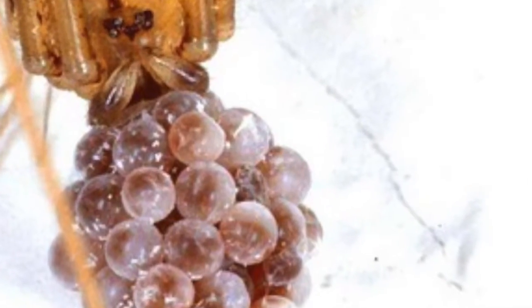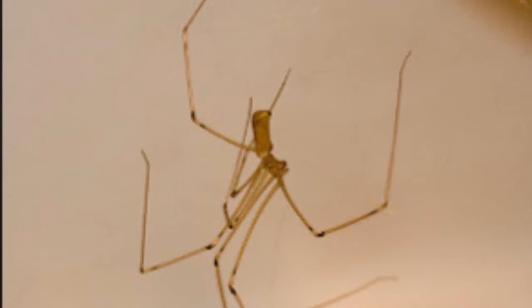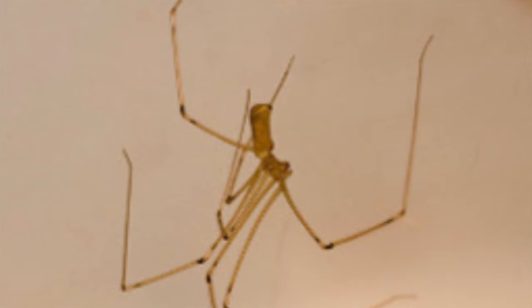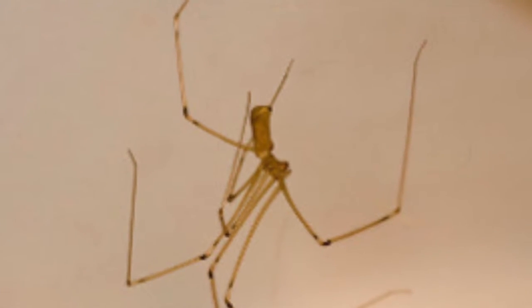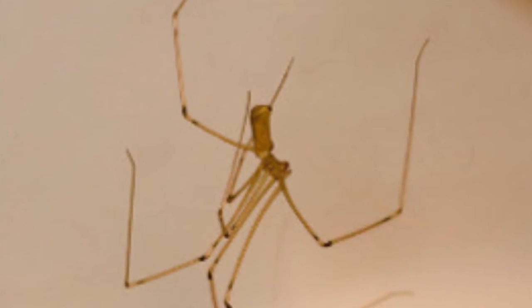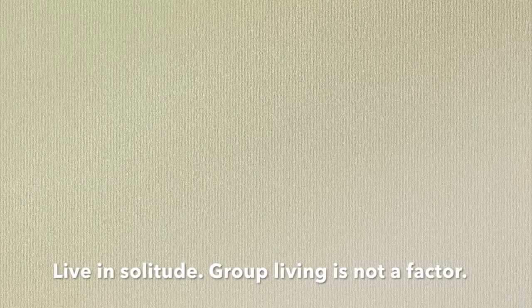One major concept covered in lecture that I am able to link this behavior to pertains to group living and social behaviors. Since cellar spiders live in solitude, they do not benefit from group predator avoidance and do not partake in theories such as the dilution effect and the selfish herd theory. The gyrating motions performed act as an ecological force that shapes sociality because they allow the spider to forego the use of groups in regards to predation pressures by still remaining somewhat undetectable.